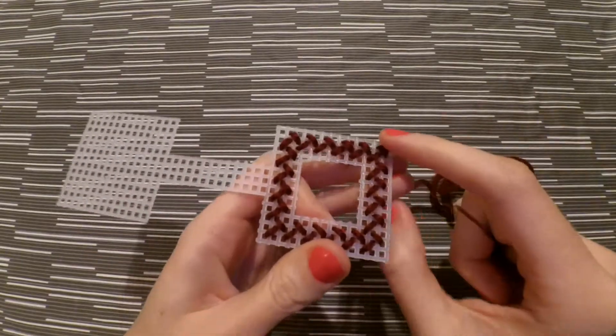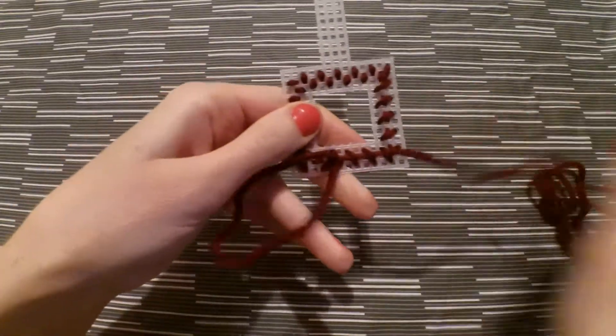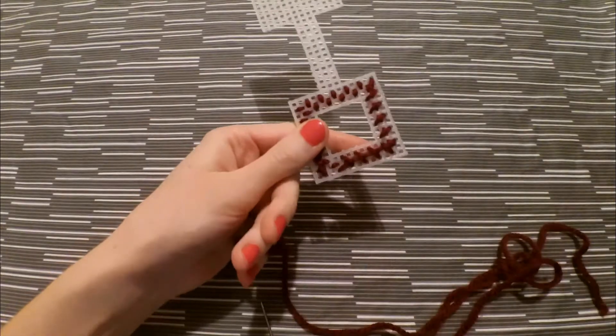So once you've finished just turn the canvas around, tuck your needle under three or four stitches and pull tightly and cut off the excess yarn with a pair of scissors.